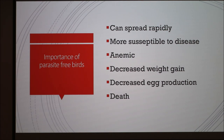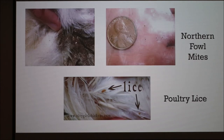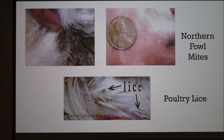Eventually, a heavy infestation will lead to death. You can see how small the northern fowl mites are in the pictures, but if your bird has them, you can see them. And if they get on you, you can see them crawl as well. The lice are a little bit bigger too.